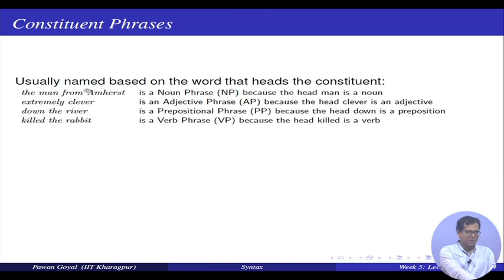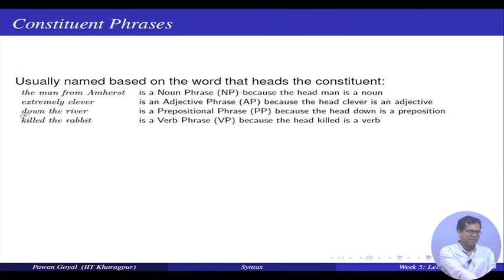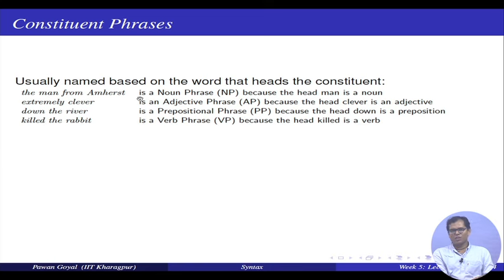Similarly, 'extremely clever' — the head here is 'clever', which is an adjective, so this is called an adjective phrase. 'Down the river' — the head is 'down', a preposition, so this is a prepositional phrase. 'Killed the rabbit' — the head is 'killed', which is a verb, so this is called a verb phrase. Like that, we define constituency phrases by identifying the head of that phrase.